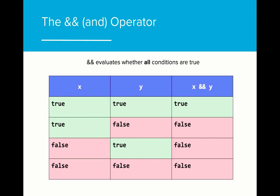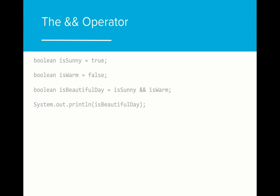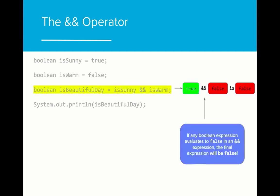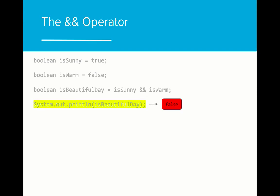The AND operator evaluates whether all conditions in an expression are true. If any of the statements evaluate to false, then the final Boolean expression will be false. You may want to study this table in a bit more depth on your own. Let's look at this example. The Boolean variable is beautiful day evaluates the result of is sunny AND is warm. It can only be a beautiful day if it is sunny and it is warm. When we evaluate is beautiful day, the final expression will be false because is warm is false. If any Boolean expression evaluates to false in an AND expression, the final expression will evaluate to false. When we print the value of is beautiful day, the result will be false.